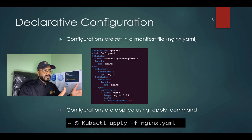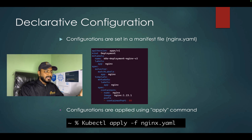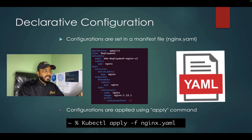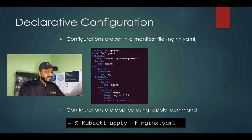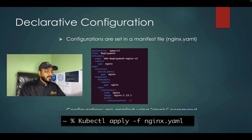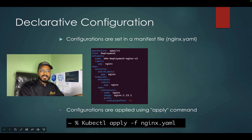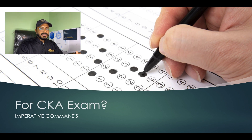Now let us look at how declarative configuration looks. Sometimes you might need to write a YAML file specifying the API version, the kind of object, metadata, labels, selectors, templates, and the container section with the image name. Once the file is created — say nginx.yml — you can run: kubectl apply -f nginx.yml and this will create the deployment for you. For the CKA exam, we should stick to imperative commands because this saves a lot of time.